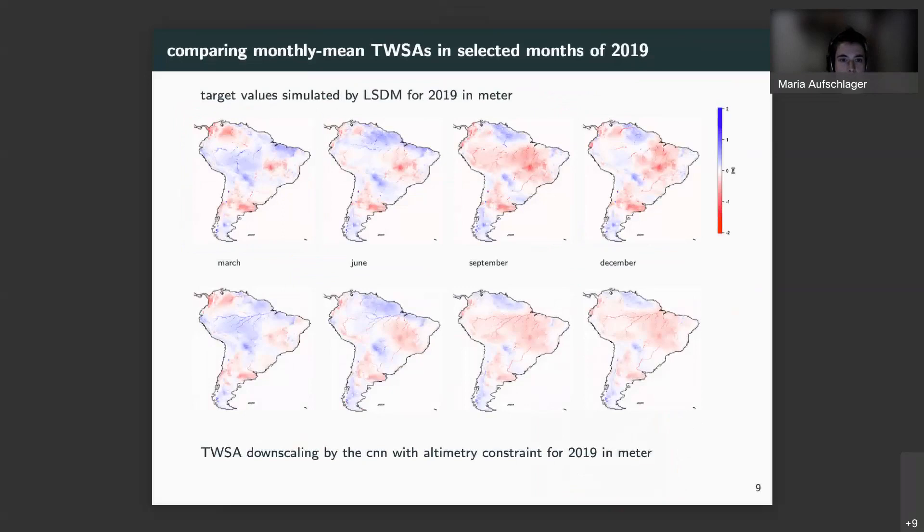Here, I show selected months for the downscaling and the target values of the year 2019. On the top row, you can see target values simulated by the LSDM for 2019. In the bottom row, the terrestrial water storage anomalies downscaled by the neural network with the constraint. From left to right, you see the months displayed of March, June, September, and December. First of all, the downscaling shows close resemblance to the target values of the LSDM. And from small scales to large scales. So, weaker patterns, but large scale patterns are correctly assembled as well as strong small scale features and rivers.